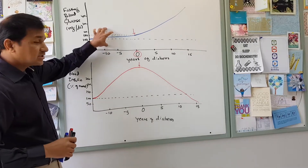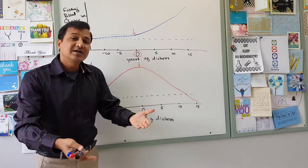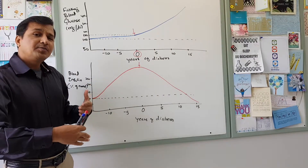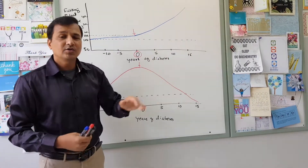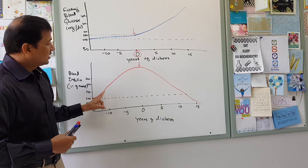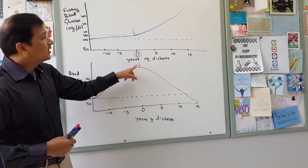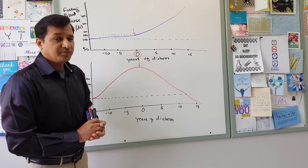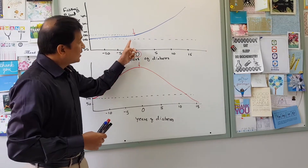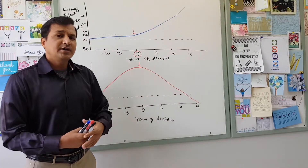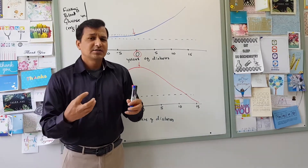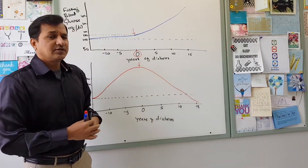In summary, insulin resistance itself does not cause type 2 diabetes mellitus, but it is the precursor condition that predisposes a patient to developing it. Insulin resistance causes a constant rise in blood glucose, compensated by increased insulin secretion, but eventually the beta cells fail and insulin secretion drops, causing blood glucose to rise above the diagnostic threshold. This is the pathophysiology of type 2 diabetes mellitus.